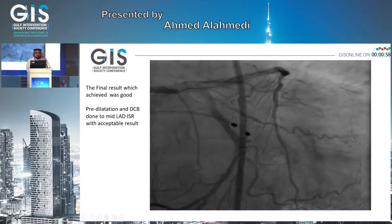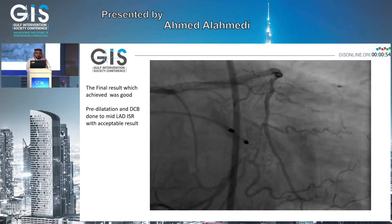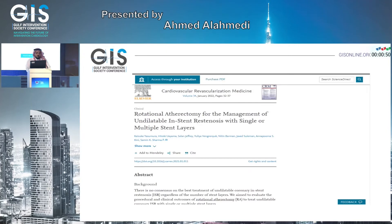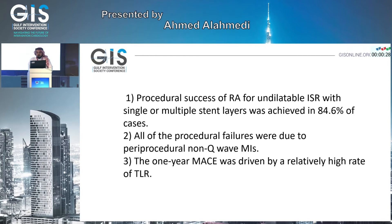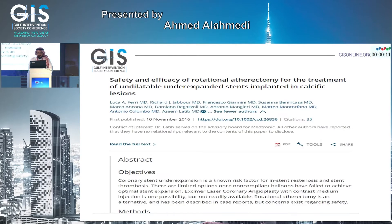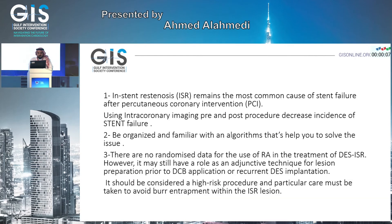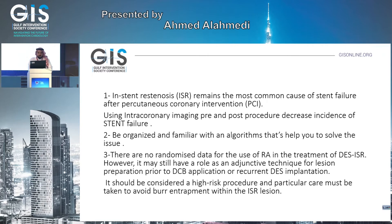After that, we pre-dilated the mid-LAD — thankfully it wasn't as severe as the ostial one. Rotational atherectomy is reported in the literature for drug-eluting stent in-stent restenosis, though it is not a randomized trial. There are papers showing ISR with single or multiple stent layers was achieved in 84% with rotablation. All procedural failures were associated with pre-procedure MI, and one-year MACE was at a relatively higher rate. Using imaging pre- and post-procedure will decrease ISR. Thank you.